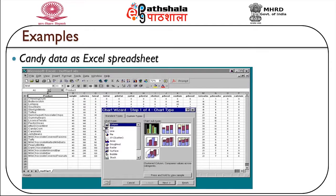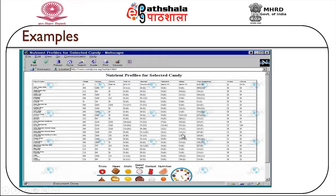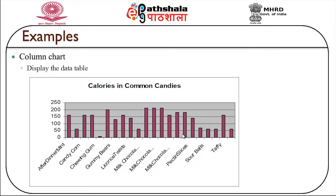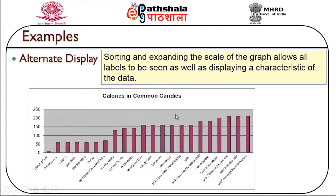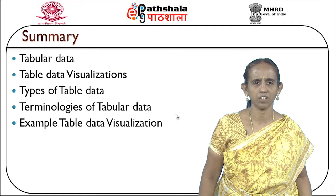An example shows candy data represented as an Excel spreadsheet with various candies and their features, which can be visualized in the form of bar charts. One bar chart displays calories in common candies, and another shows the same data with sorting and expanded scale, allowing all labels to be seen and displaying characteristics of the data.